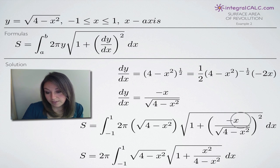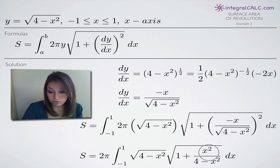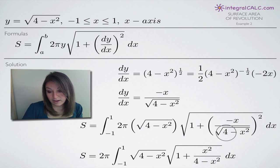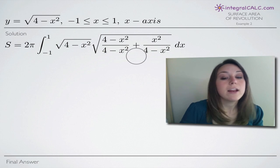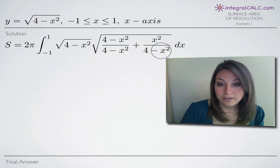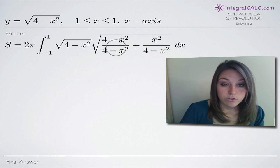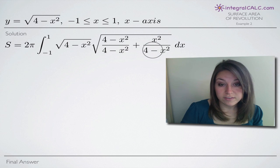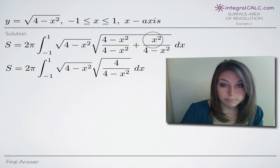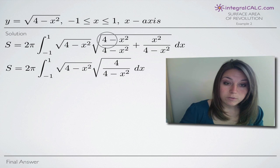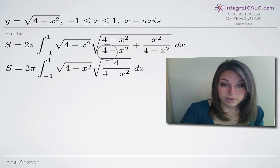This square root of four minus x squared stays the same. For the derivative that we've squared, we square both top and bottom: negative x squared becomes positive x squared in the numerator, and since we're squaring a square root in the denominator, we're left with just four minus x squared. Now we want a common denominator within the square root, so we change the one to four minus x squared over four minus x squared — which still equals one — giving us a common denominator. Combining the two fractions, four minus x squared plus x squared means the x squared terms cancel, leaving just four in the numerator and four minus x squared in the denominator.